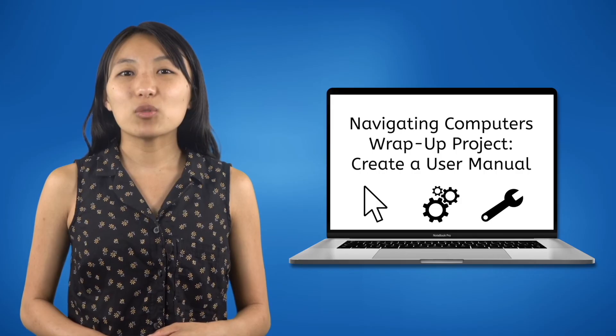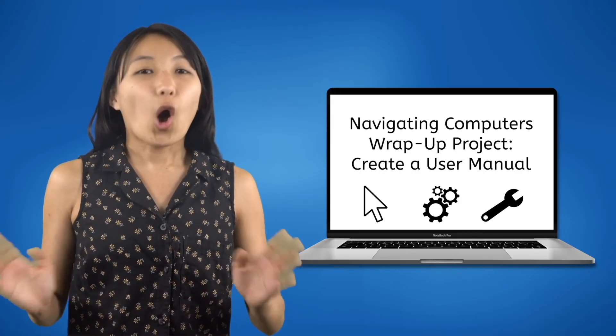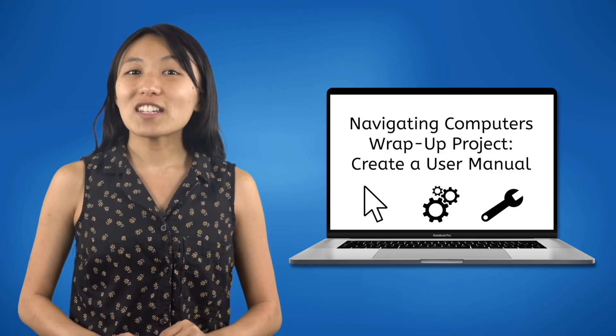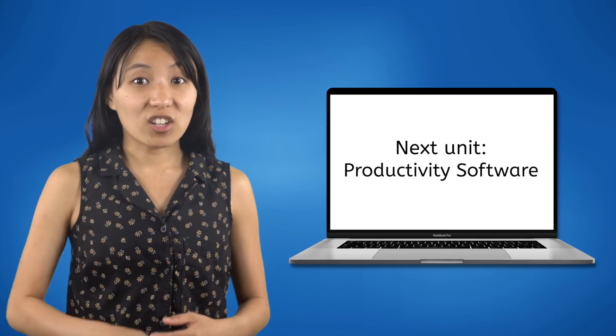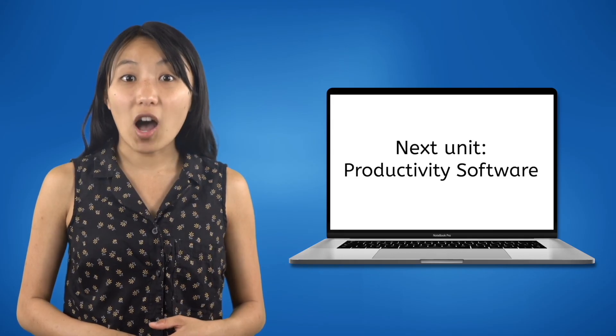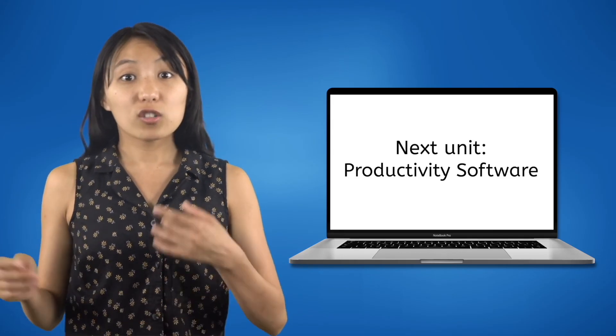Feel free to create this manual in whatever format or method you want. Once your manual is complete, you'll be ready to take the assessment for this unit. After that, we'll finally be able to get into the ways you can actually use computers to complete tasks. The next unit is all about productivity software — programs that you can find on nearly any computer because of how often they are used to accomplish tasks for work, school, or daily life. Remember: your brain is the smartest computer you'll ever have, so keep it charged and never stop updating it. Good luck on your assessment and I'll see you next time.